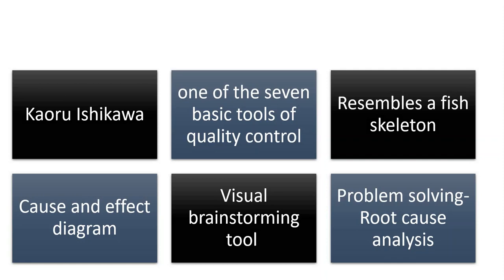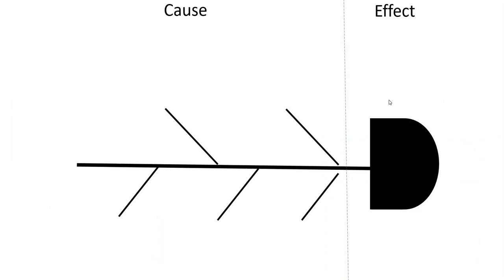Now let's discuss how to draw an Ishikawa diagram. First you need to understand the anatomy of the Ishikawa diagram. It has two parts: the effect part and the causes part. This is the fish head, and this is the bone of the fish.